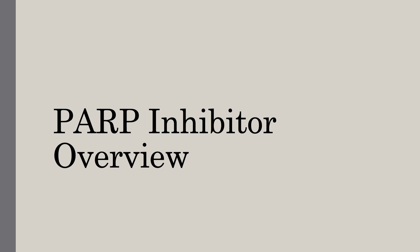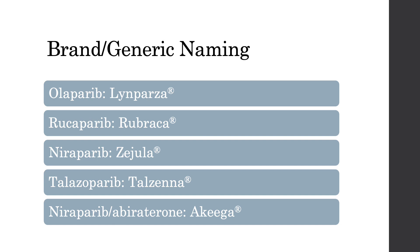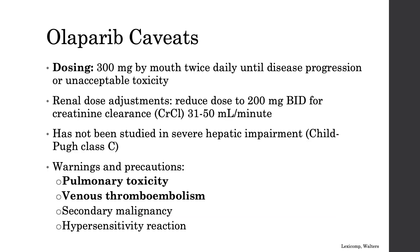In the last section, we'll cover a PARP inhibitor overview including brand and generic naming, dosing caveats, warnings and precautions, adverse effects, and costs. The agents are: olaparib (Lynparza), rucaparib (Rubraca), niraparib (Akeega as the niraparib/abiraterone combo pill), talazoparib (Talzenna), and the niraparib and abiraterone combination pill (Akeega).